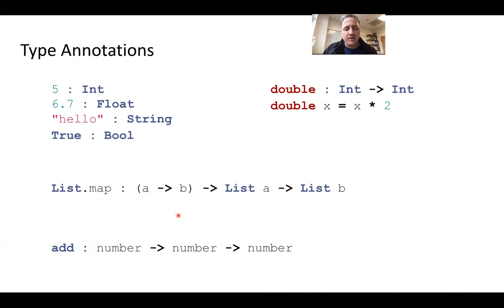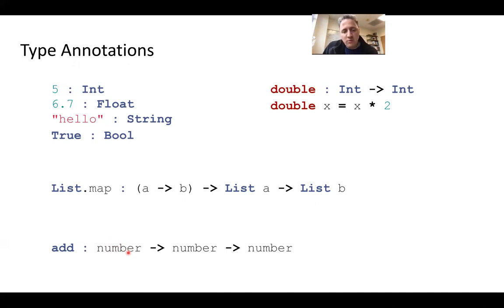This is called type variables. Here's another example — the add function — where notice the lowercase n in number. It's a type variable. So we're saying the add function takes two things of the same type and returns a third thing of that type. So if you pass in a string and a string, it returns a string; an int and an int returns an int. But you could not pass in an int and a string, because those would be different types. This is saying you get the same type for all three.